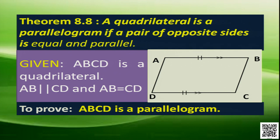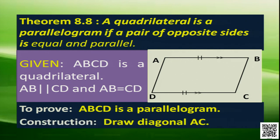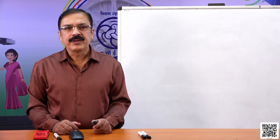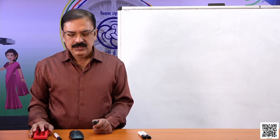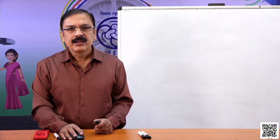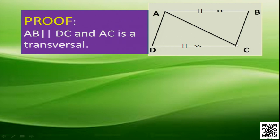To prove it a parallelogram, we need to prove AD is parallel to BC. For that, we need a transversal, so we construct by drawing diagonal AC. Now, AB is parallel to CD and AC is the transversal, so we can identify alternate interior angles: angle BAC is equal to angle ACD.